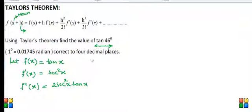Now see here, this 46 degrees we can bifurcate in two parts. First part is 45 degrees because tan 45 is very famous. So we can take x as 45 and h will take the place of 1 degree now.